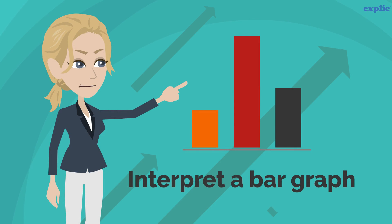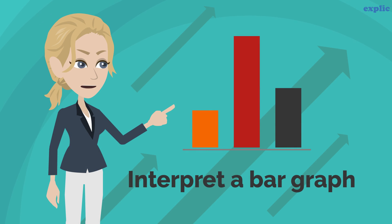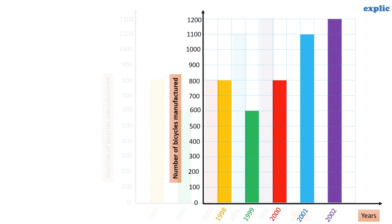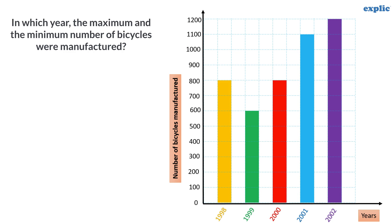You can interpret a bar graph and get various information. Let's take an example. The given bar graph shows the number of bicycles manufactured in a factory during the years 1998 to 2002. In which year were the maximum and minimum number of bicycles manufactured?